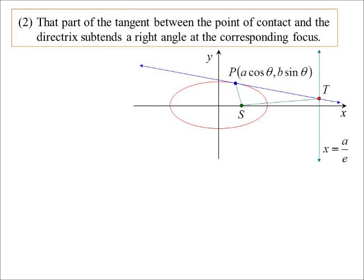Here's a more interesting property. That part of the tangent between the point of contact and the directrix will subtend a right angle at the corresponding focus. We need a diagram. There's our ellipse with directrix, and using parametric coordinates the point of contact is P = (a cos θ, b sin θ). So the part of the tangent between P and where it meets the directrix, point T, subtends an angle at the focus S. We need to prove angle PST is 90 degrees.